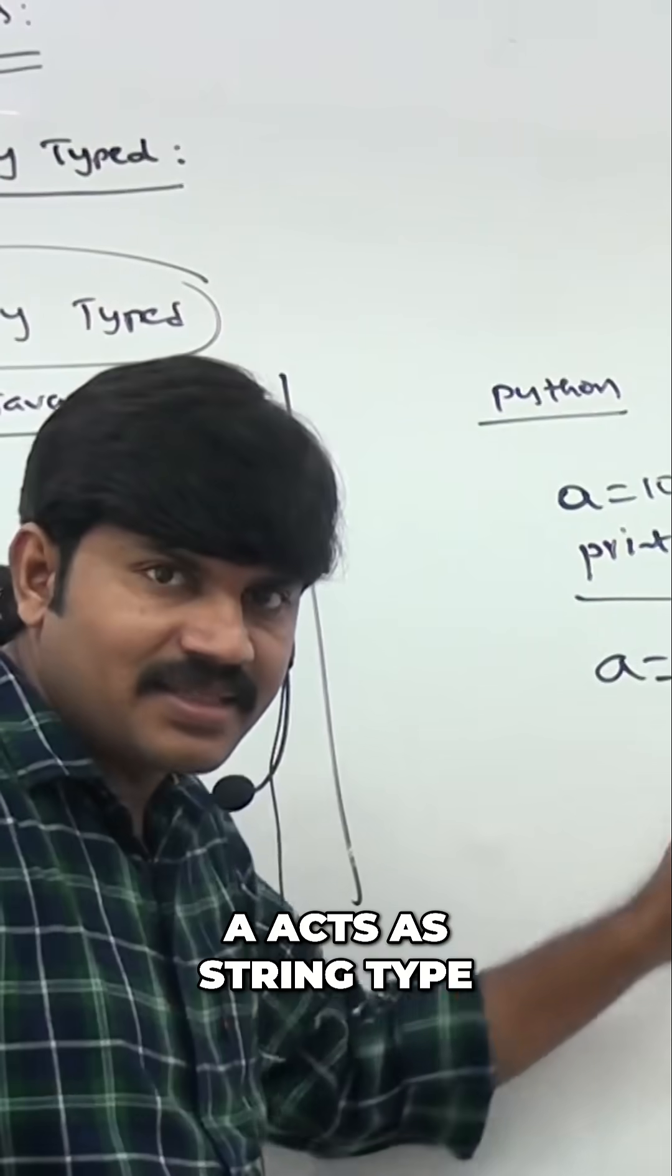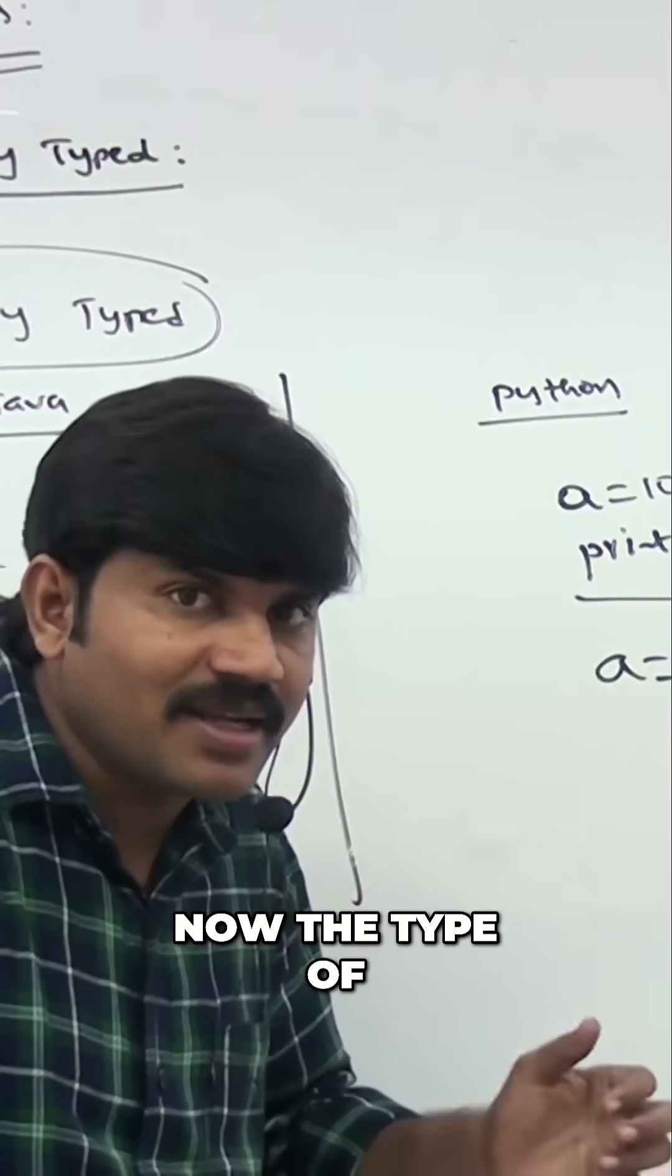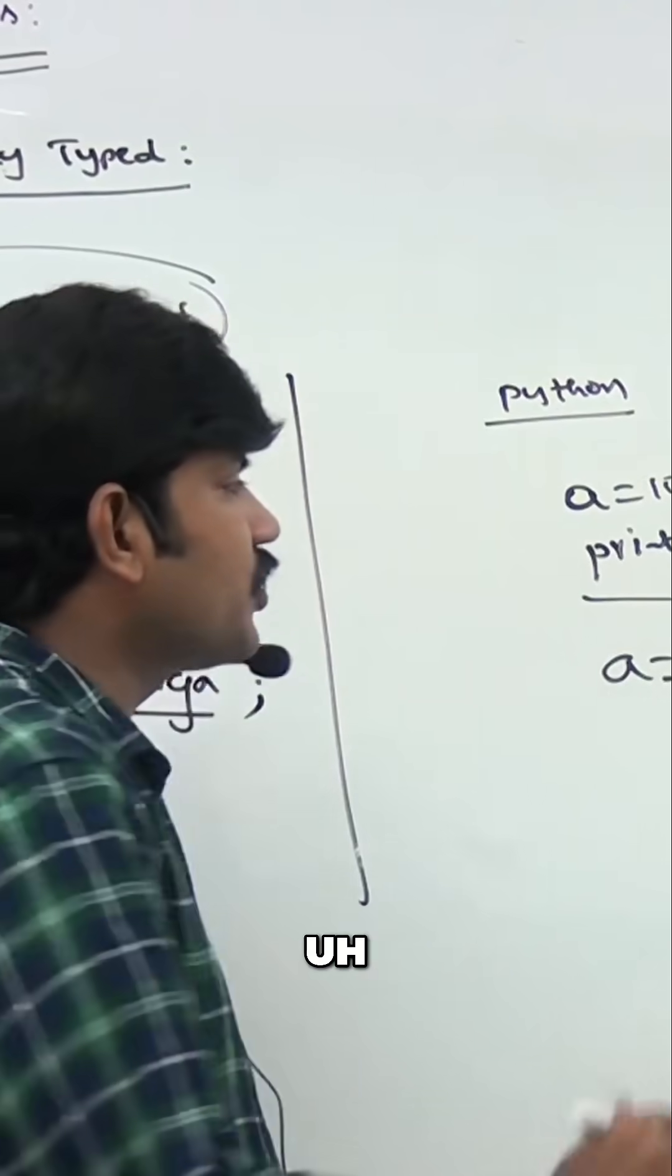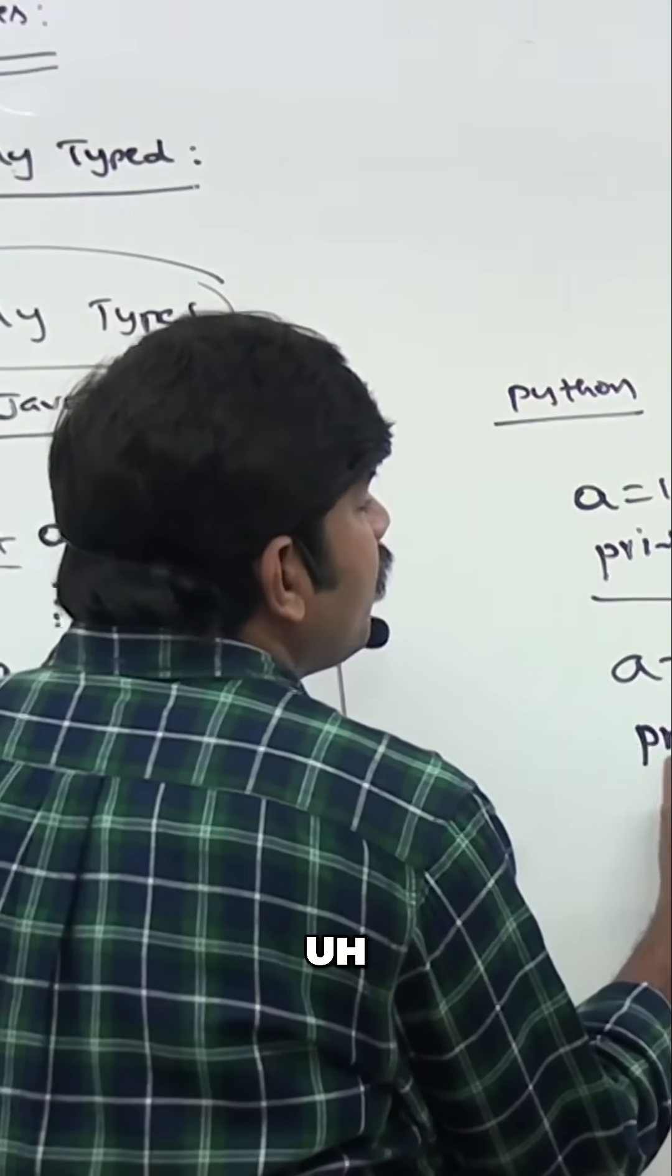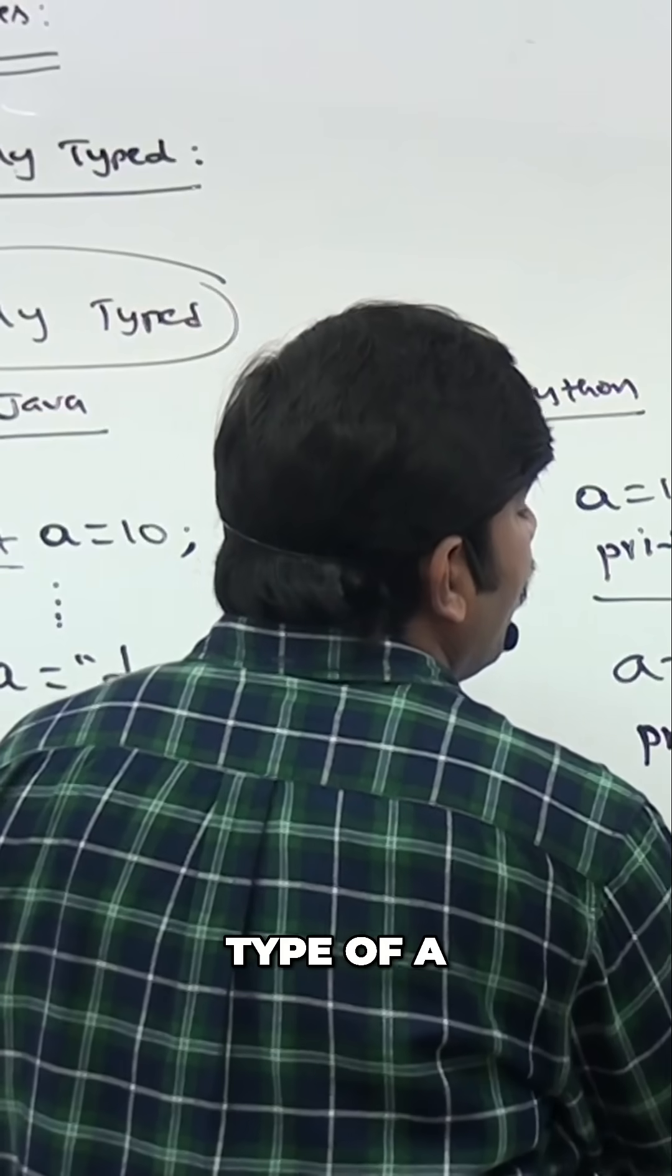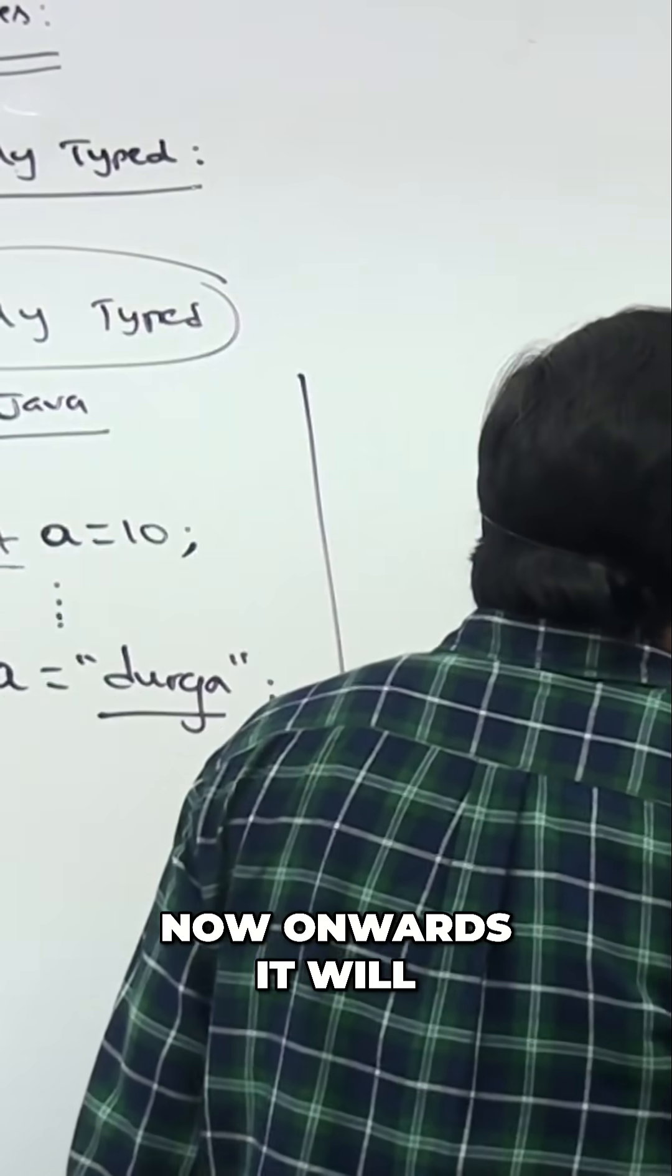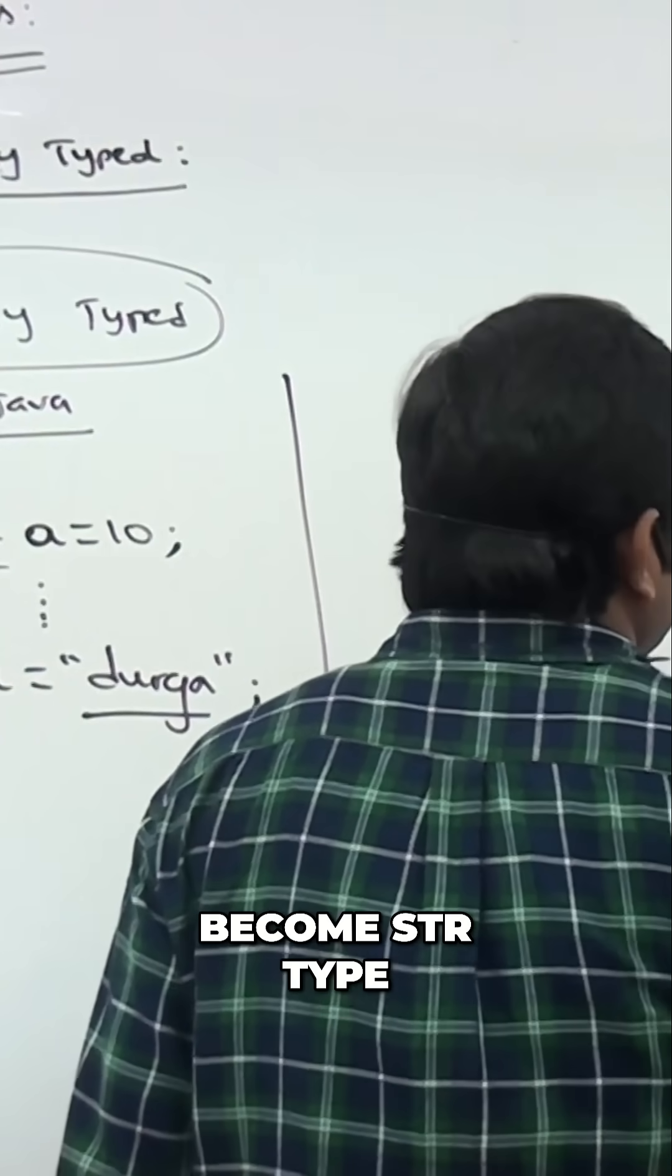Now the type of a will become string. Int type is overridden with the string type. Print, print type of a, sir. Print type of a. Now onwards, it will become str type. Now onwards, it will become str type.